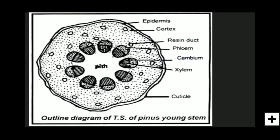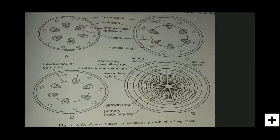The pith is made up of parenchymatous cells. This completes the internal structure of the young Pinus stem. Now let us study the Pinus older stem and secondary growth. Pinus stem increases its thickness by secondary growth; secondary xylem and secondary phloem are formed, along with abundantly present medullary rays, making the wood soft.